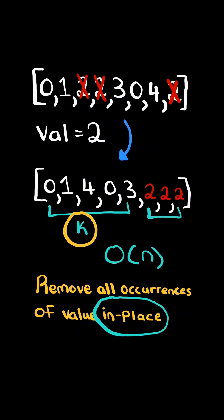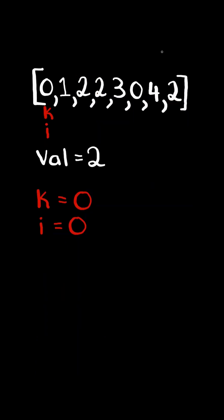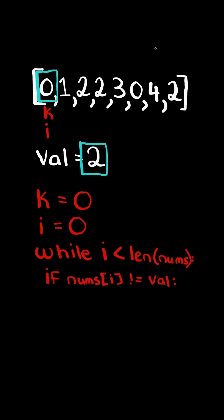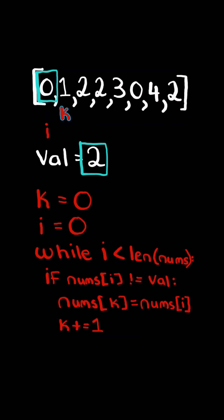We will solve this in O of n time. First, we initialize two pointers i and k to 0, and while i is less than the length of the list, if the number at the ith pointer does not equal value, then we set nums at k equaling the value at nums at i, and we advance k, and finally we advance i.